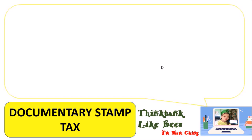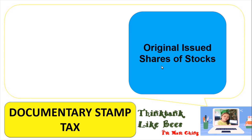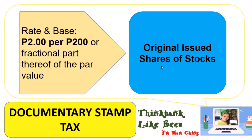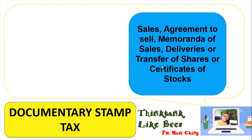Let's start with the tax base. For original issuance of shares of stock, the rate and base is 2 pesos for every 200 or fractional part thereof of the par value. For example, if we issue stocks worth 20,000 pesos: 20,000 divided by 200 equals 100, multiplied by 2 pesos equals 200 pesos. So you need to pay 200 pesos in documentary stamp tax.